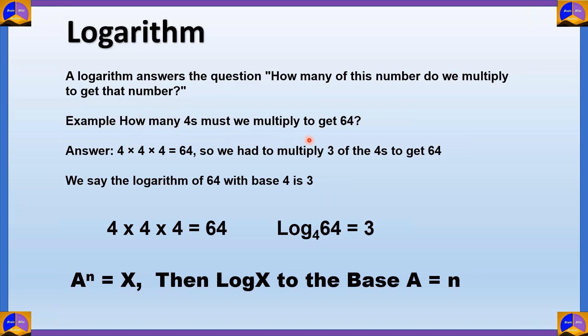How many fours must we multiply to get 64? For those of you who have studied exponentiation, you know that four cube is equal to 64. That means four times four times four gives you 64. So we have to multiply three fours together to get 64. Please note that this is not three into four, this is four into four into four. That is why it says three of the fours.